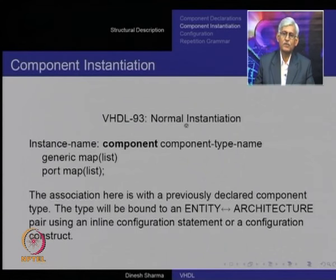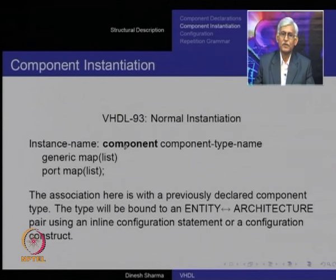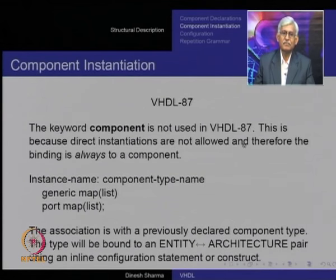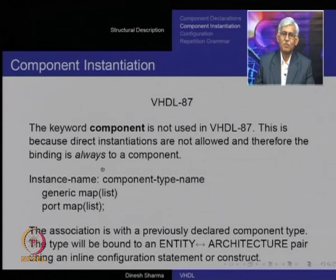In normal component instantiation, you write the instance name, the keyword 'component', then the component type name, followed by the generic map and port map. In VHDL 87, the keyword 'component' was not required because the only option was to instantiate component types, so you used the instance name directly followed by the component name, then the generic map and port list.